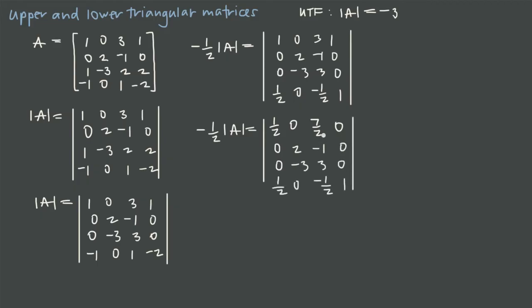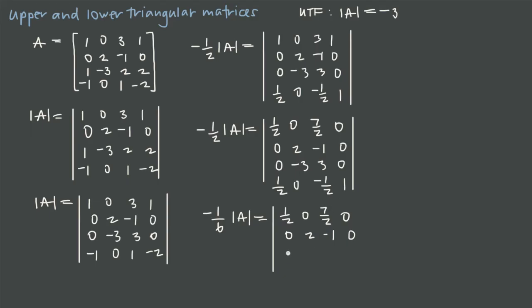We still need to eliminate the −1 and the 7/2 above the diagonal. To make that easier, we multiply row 3 by 1/3 to turn the 3 into a 1. This multiplies the determinant factor by 1/3, so we now have −(1/6) × det(A). Row 3 becomes: 0, −1, 1, 0. The fourth row remains: 1/2, 0, −1/2, 1.